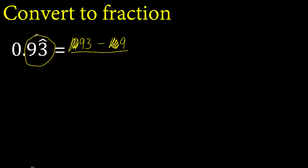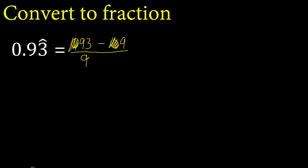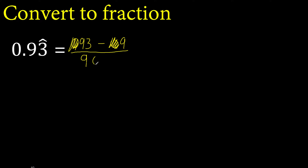After the point, there is one number under the symbol, therefore always nine. One number, nine, one time. After the point, there is one number outside the symbol, therefore zero, always zero. One number, zero, one time.